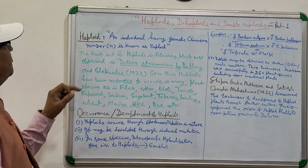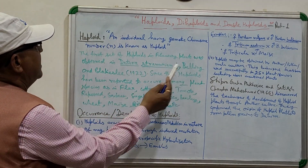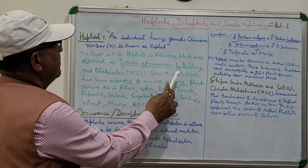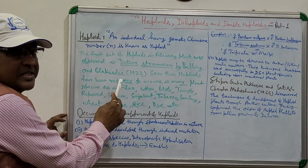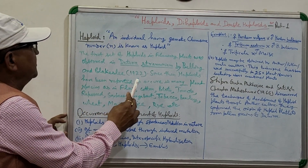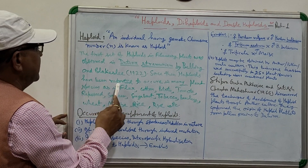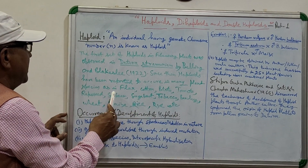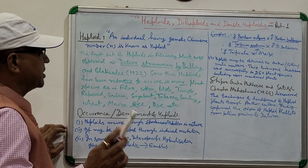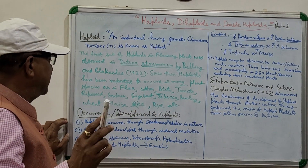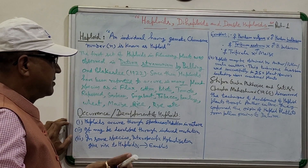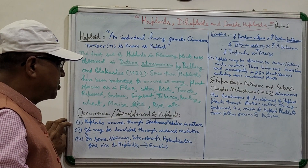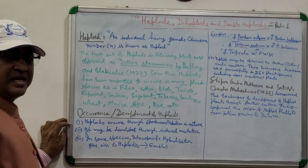The first haploid in flowering plants was observed in Datura stramonium by Belling and Blakeslee in 1922. Since then, haploids have been reported to occur in many plant species, including flax, cotton, potato, tomato, rapeseed, soybean, sugar beet, tobacco, barley, wheat, maize, rice, rye, and others.